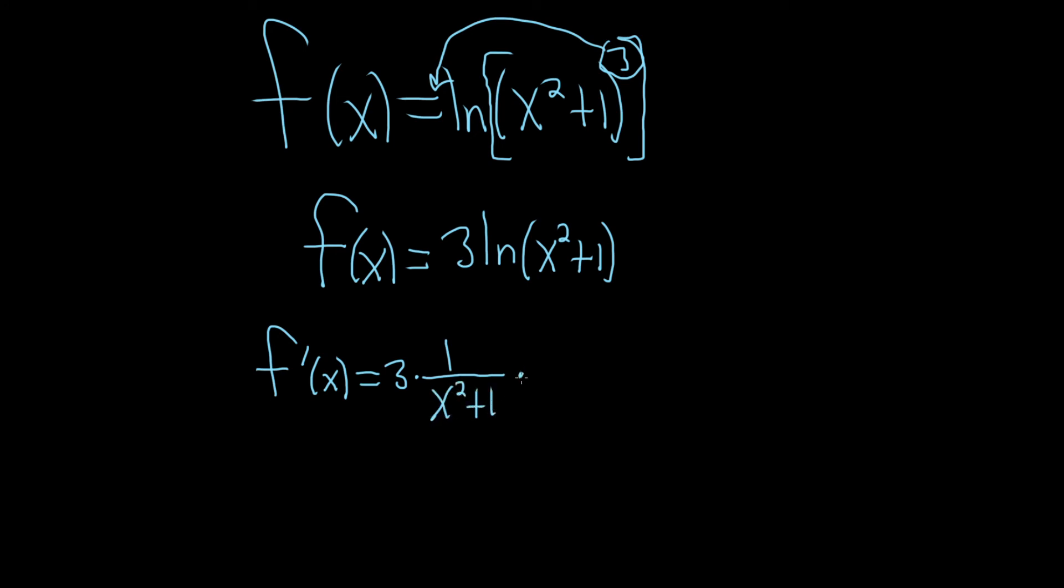times the derivative of the inside. So the derivative of x squared is 2x, and the derivative of 1 is 0, that's the chain rule. So it's 1 over whatever is here, times the derivative of your inside.